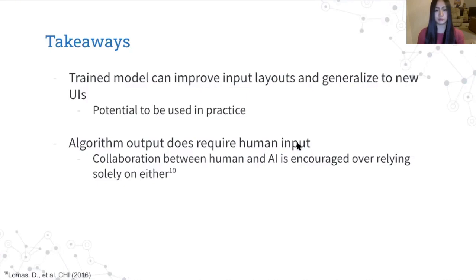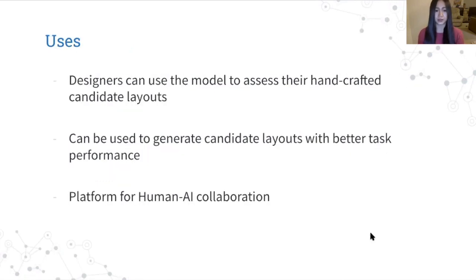So what can we learn from all this? We demonstrated that this technique is able to update UI layouts to have improved task performance and that the model is able to generalize and improve layouts of new UIs that it has never seen before, which means that this technique has potential to be used in practice. And as you saw in the optimization results, some human input could be used to improve the algorithm's output via specifying constraints or making minor tweaks to the output. But studies have shown that collaboration between human and AI is encouraged over relying solely on either because both human judgment and computer optimization can be misleading and they can fix each other's mistakes. This layout optimization system has many uses. The designer can use the model to compare the task performance of their handcrafted layouts and they can use the optimization algorithm to generate layout alternatives with better task performance. And the system also provides a platform for human AI collaboration where a designer and the system can work together to develop a great layout.